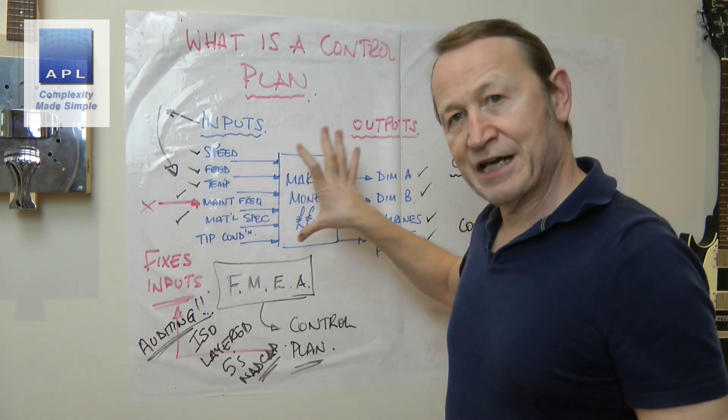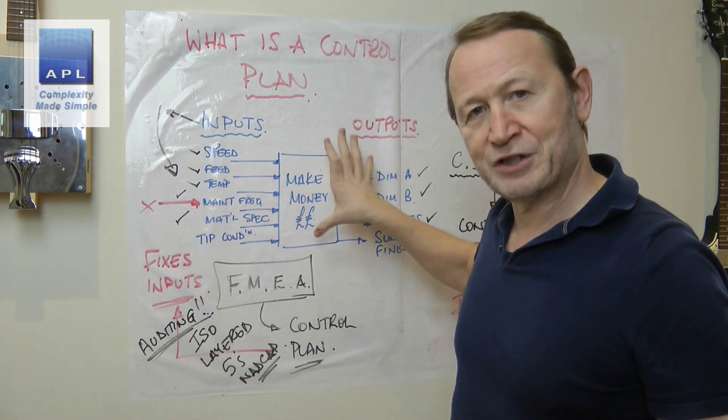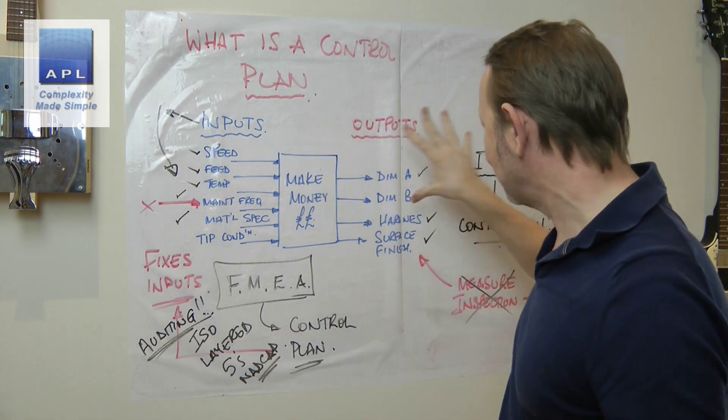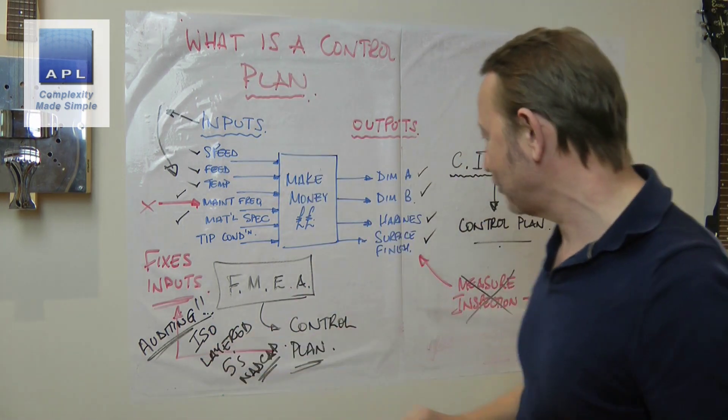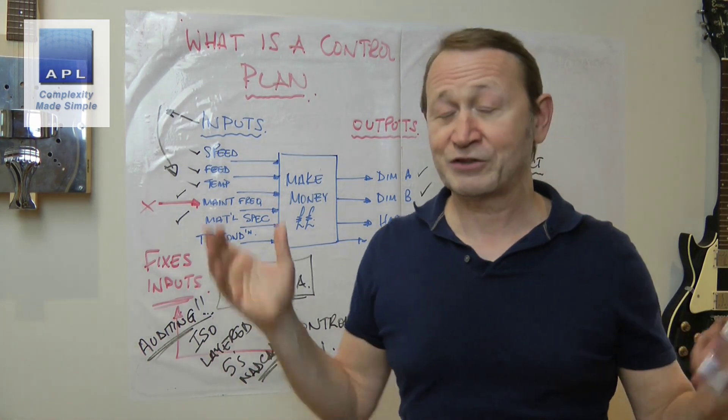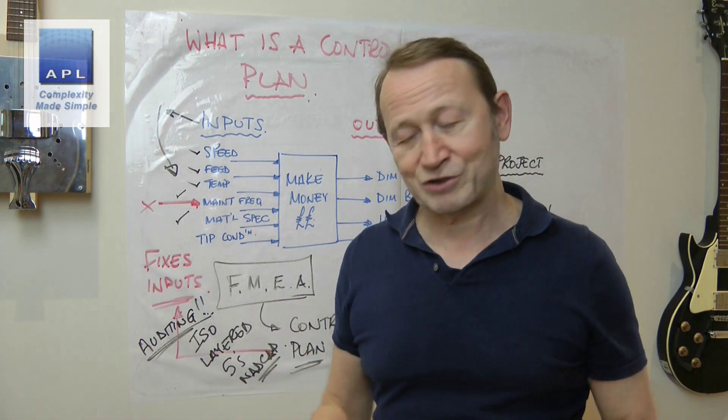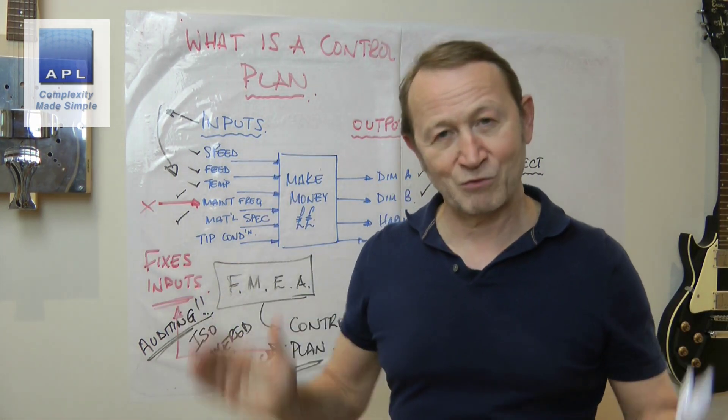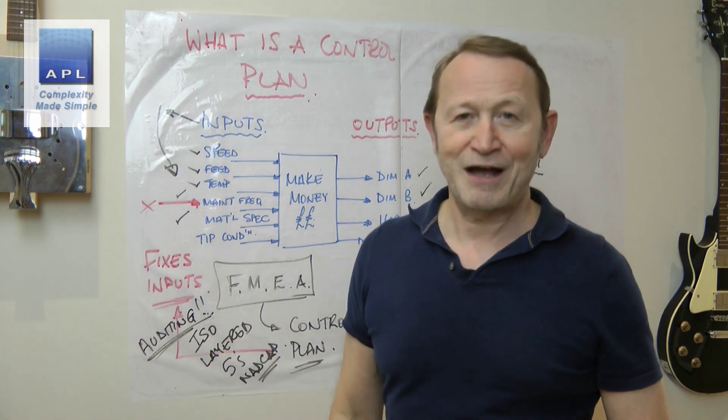And if you find that someone is violating the input controls, you shoot them, because that is violating the control plan. But that's control. Control is setting standards at this end and then auditing those standards so that they never ever move. And if they never ever move, you always hit the dimensions, the hardness, and the surface finish, and you never need to inspect anything because you're confident you always make good product. That's a control plan.